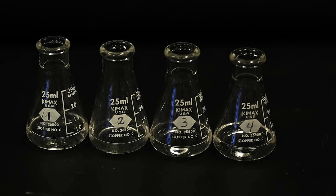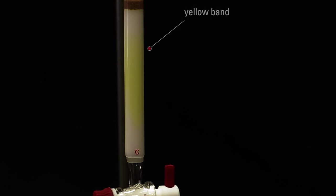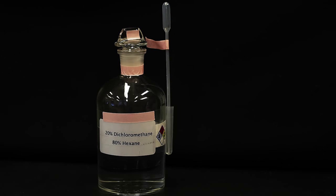After the collection of four fractions, you can see that the yellow band has moved about one third of the way down the column. At this point, increase the polarity of the solvent to elute the yellow band more quickly. Change the solvent to 20% dichloromethane, 80% hexane.